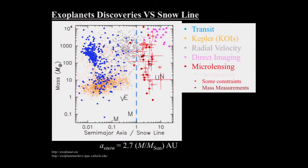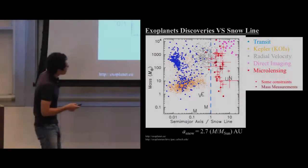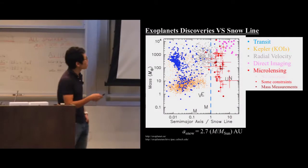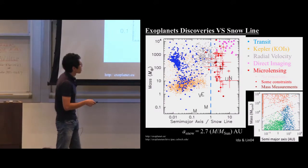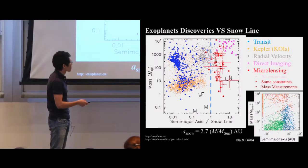The red points show microlensing discoveries. As we learned yesterday, microlensing is very sensitive to this unique parameter space, which is important because this region is the most efficient for planet formation. We want to compare these discovered planets with a population census model from the literature.